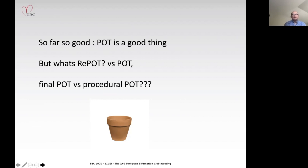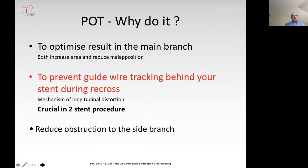POT is clearly a good thing in the main branch. Procedural POT is used to prevent guidewire tracking behind the stent during recross—this is obviously crucial, particularly in a two-stent procedure, and is a way of avoiding longitudinal distortion.